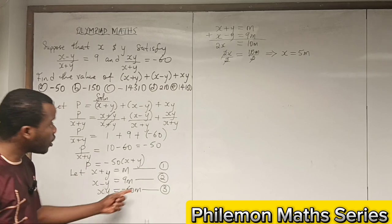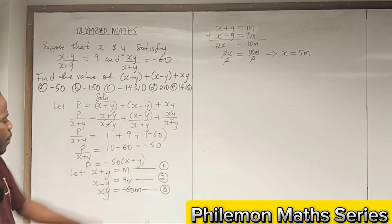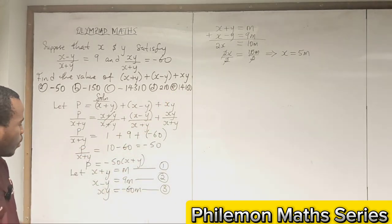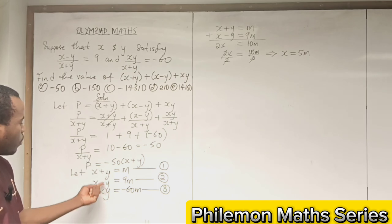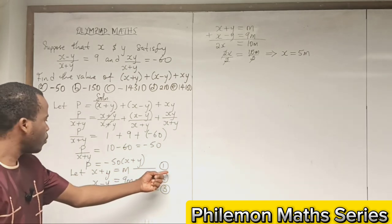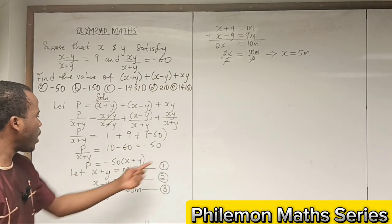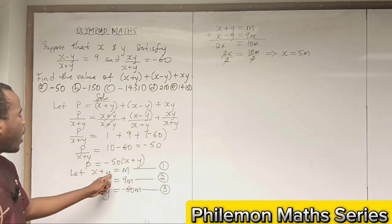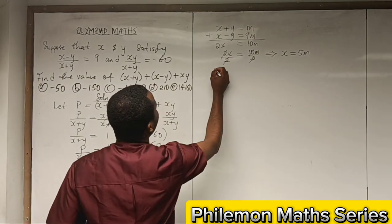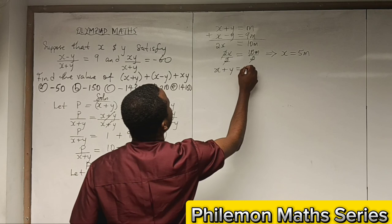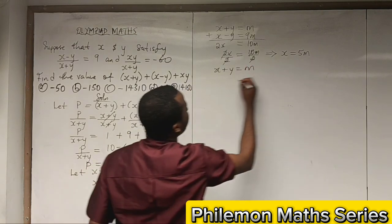Now let's substitute x = 5m into equation 1 to look for y.